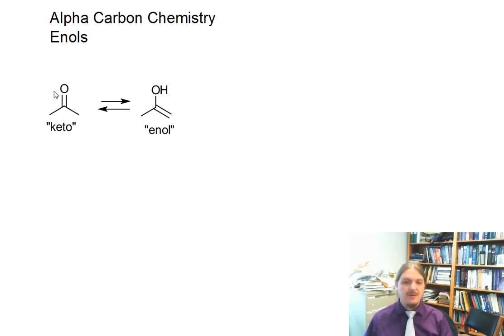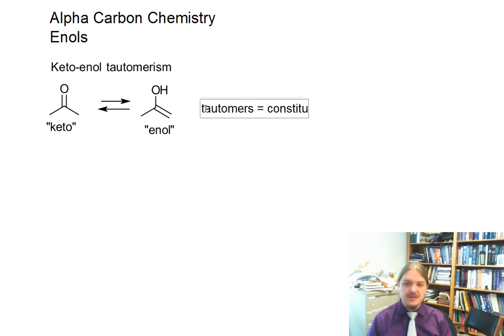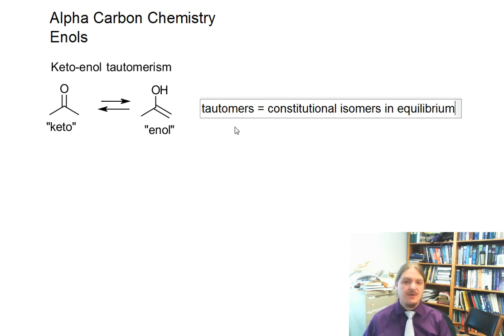Every carbonyl compound that's out there has an enol, unless there's certain other circumstances. Enols come from something called keto-enol tautomerization or tautomerism. The notion here is that these two things are tautomers, which are constitutional isomers in equilibrium. We'll talk about how that equilibrium works in a moment.